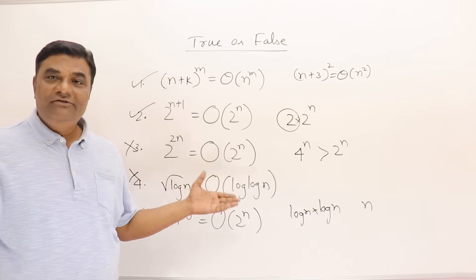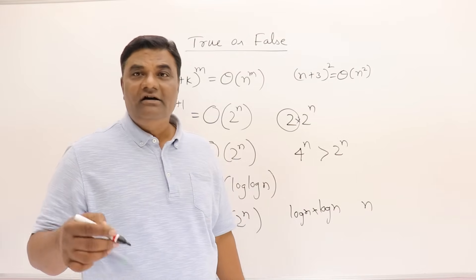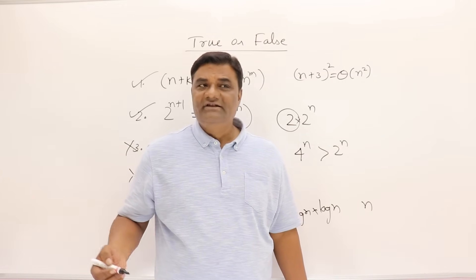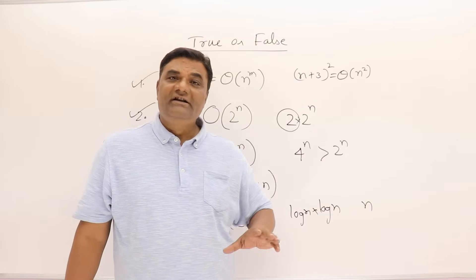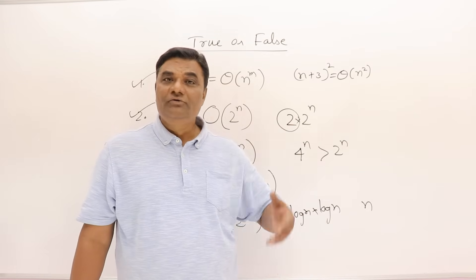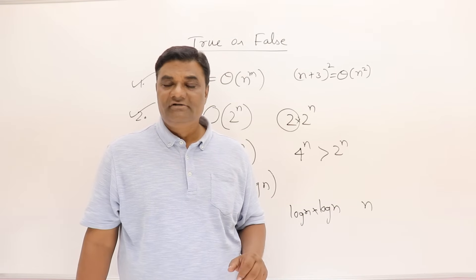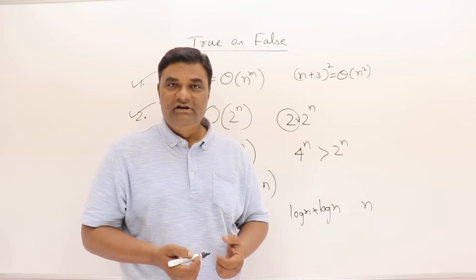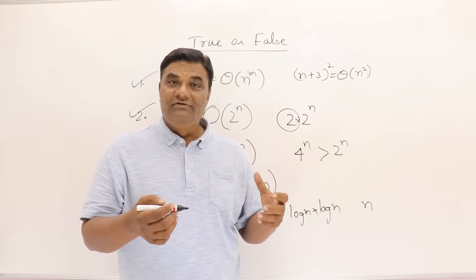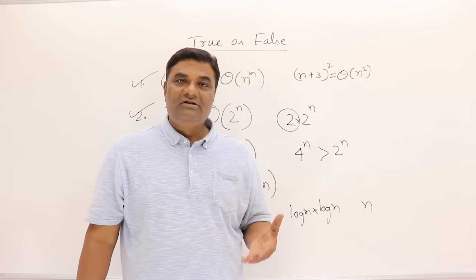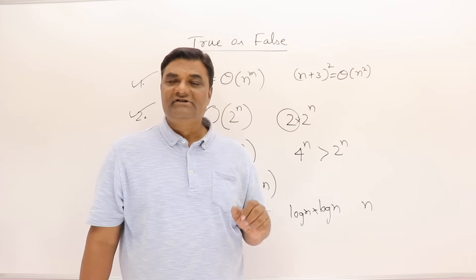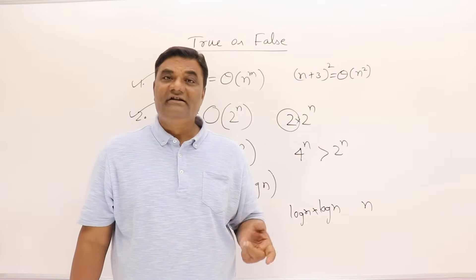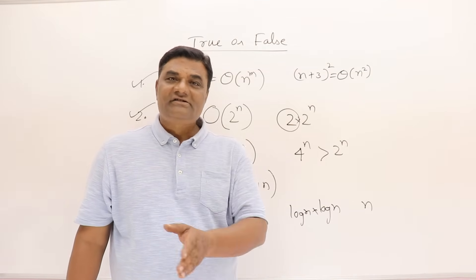That covers several problems using asymptotic notation, showing the approach for solving them. These examples are from competitive exams, so with a bit of practice you'll be able to handle any such question. This concludes the first chapter of algorithms — covering algorithm analysis and asymptotic notation. In the next videos we move to the second chapter: algorithmic strategies, starting with divide and conquer and the greedy method.